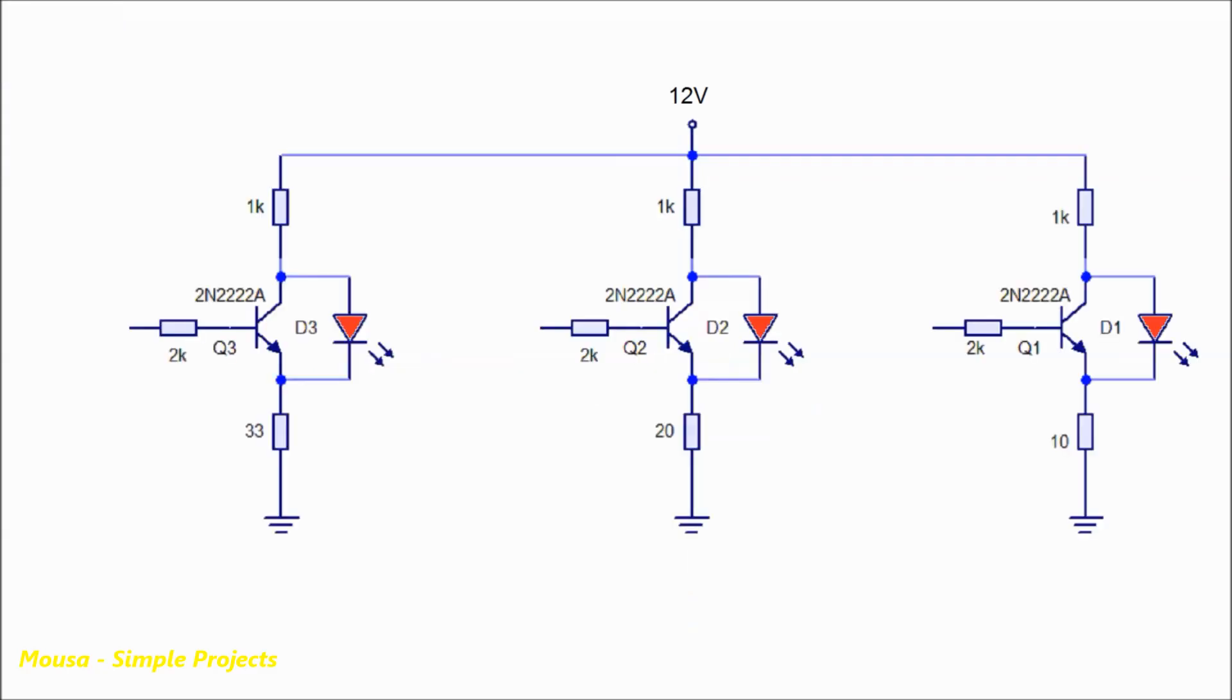I'm using the same transistor circuit for each channel. The only difference between them is the value of the resistor between emitter and ground. Let's say the LED is drawing 10 milliamps of current. So the voltage drop on the emitter of the first channel is 0.1 volts, the second channel is 0.2 volts, and the third channel is 0.33 volts.